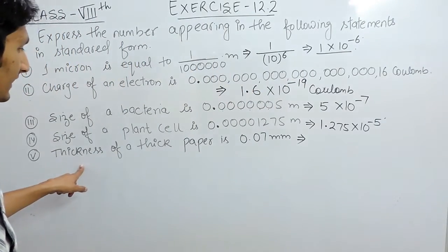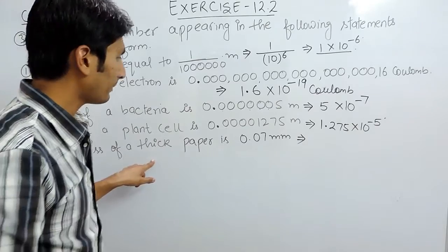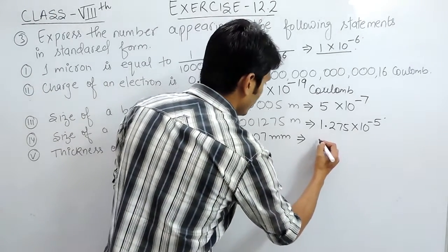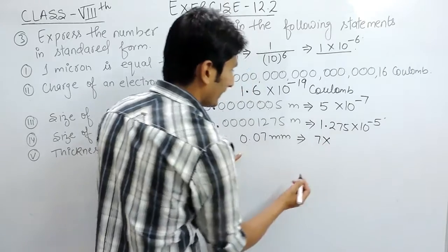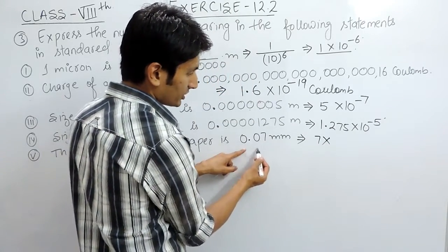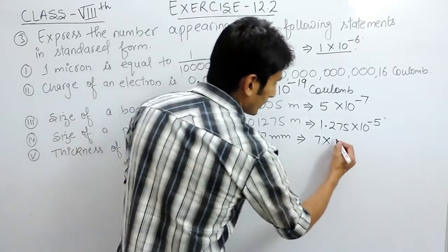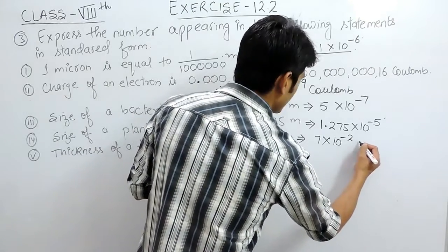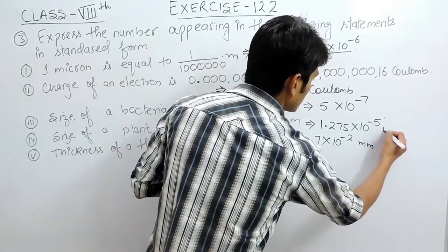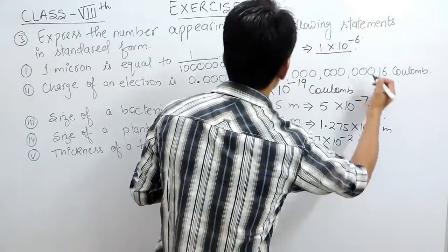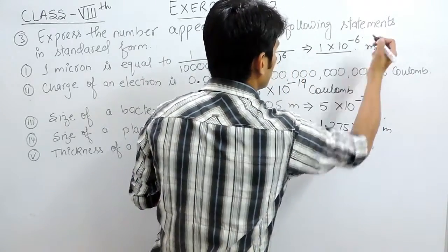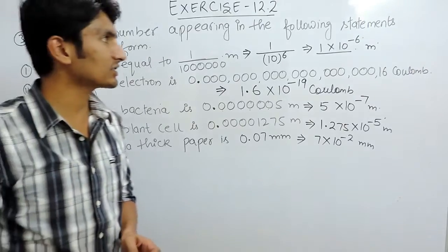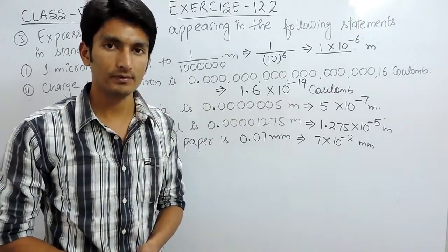In the last part, the thickness of thick paper is given as this many millimeters. That would be 7 multiplied by 10 raised to power minus 2, since the decimal is shifted after 2 digits. Note that the bacteria and plant cell values are in meters, and the paper thickness is in millimeters. This is how you convert these expressions into standard form. Thank you.